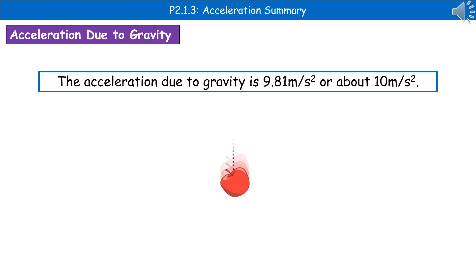The last thing you need to remember is that when we're talking about acceleration due to gravity, which we're going to be using a lot more as we go on through the physics, that has a value of 9.81 meters per second squared, or about 10 meters per second squared. Make sure you do try and remember that, because there's no guarantee they'd give it to you in the exam.